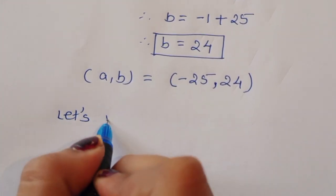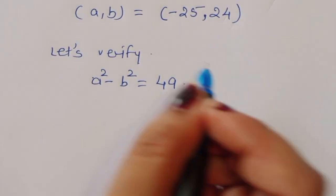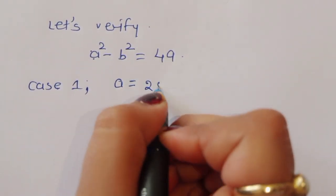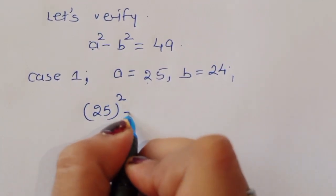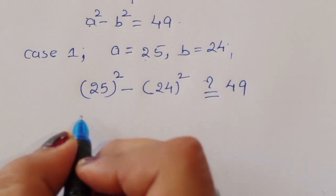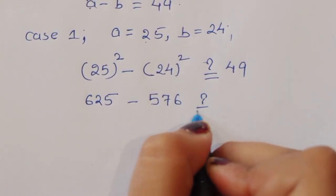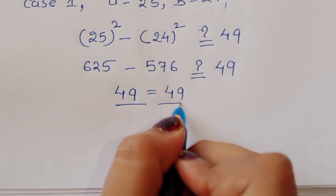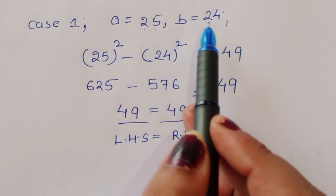Let's verify Case 1 where a = 25 and b = 24. We check: 25² - 24² = 625 - 576 = 49. Since LHS = RHS = 49, the solution is confirmed correct. The value of a = 25 and b = 24 is the correct solution.